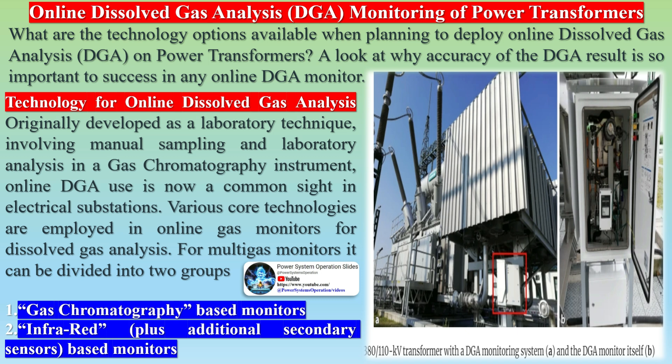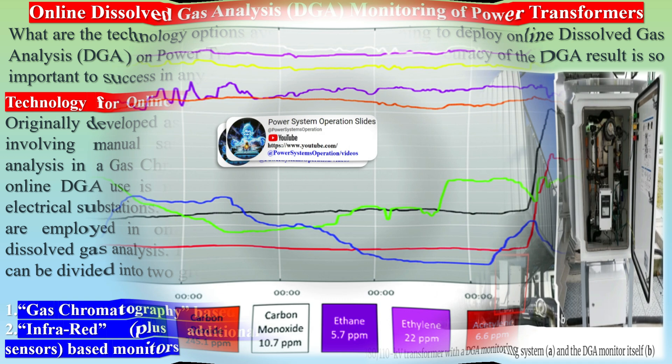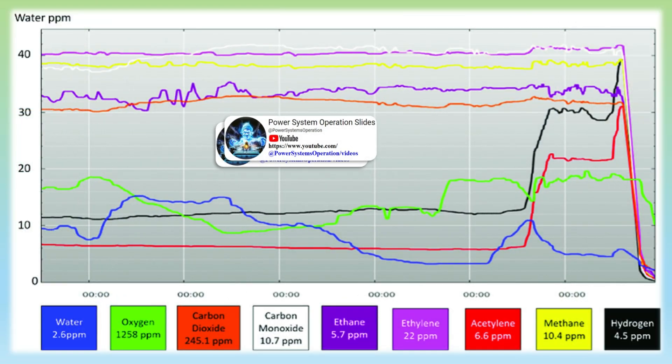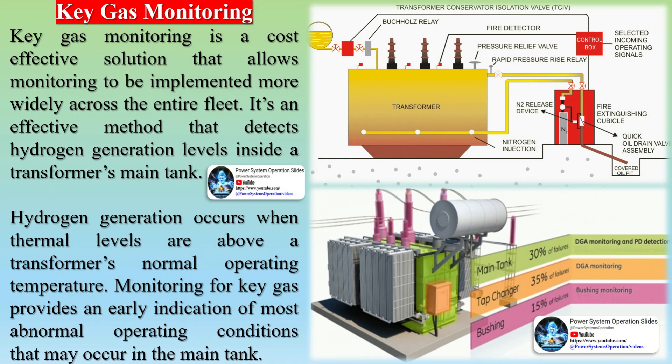For multi-gas monitors, technologies can be divided into two groups: gas chromatography-based monitors and infrared plus additional secondary sensors-based monitors. Key gas monitoring is a cost-effective solution that allows monitoring to be implemented more widely across the entire fleet. It is an effective method that detects hydrogen generation levels inside a transformer's main tank, and monitoring for key gas provides an early indication of most abnormal operating conditions.